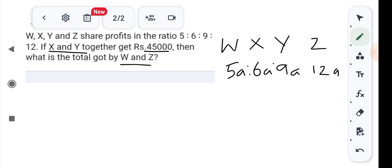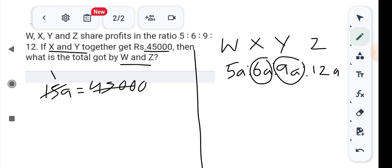So what does the question say? X and Y together. X and Y together - how much is that? 9 plus 6 equals 15. So 15a equals how much? 45,000. That means 15a equals 45,000.